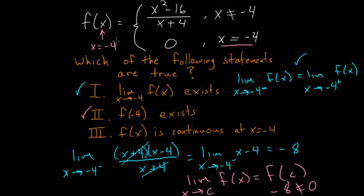Though if, instead of the function being equal to 0 at negative 4, it was equal to negative 8, then we could say the function is continuous at negative 4. But since the function equals 0 at this point and not negative 8, statement 3 is not true. So statements 1 and 2 are both correct.